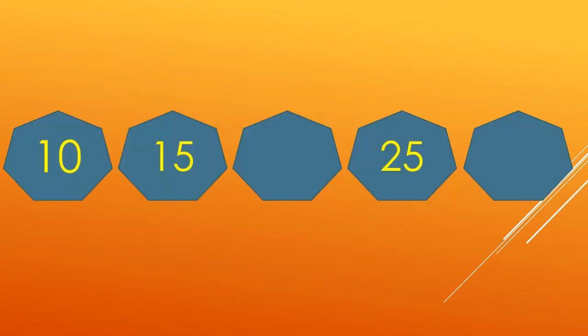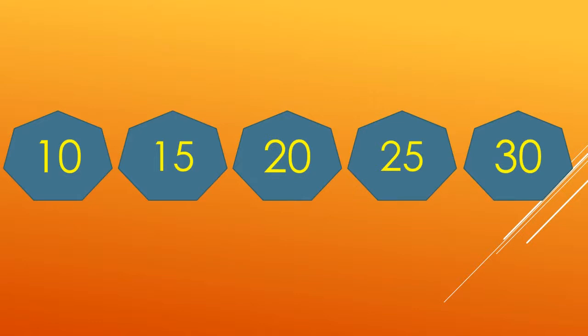Here we have the numbers 10, 15, 20, 25. The difference between these numbers is 5. Tell me, which number will come after 15 and after 25? After 15, number 20 will come, and after 25, number 30 will come. Correct! The pattern is now complete. Good job!